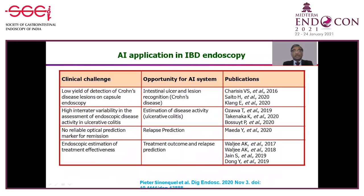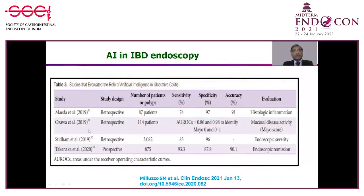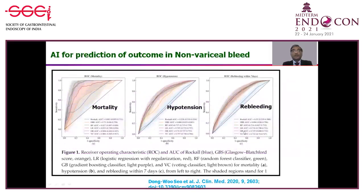AI has also found application in IBD-related endoscopy for detection of activity, detection of Crohn's lesions, prediction of remission, and prediction of mucosal healing. For histologic inflammation, the accuracy was 91 percent. For Mayo score and endoscopic Mayo score the accuracy was also very high, with pretty high sensitivity and specificity for endoscopic remission as well.